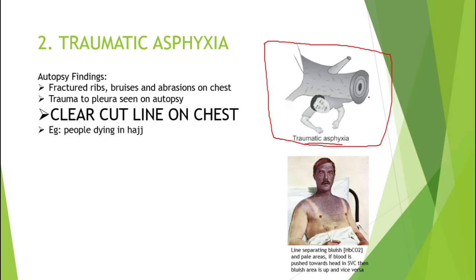This immobilization can be anterior — for example, if a person sits on the chest of the victim — or posterior, as in this picture where the trunk of the tree has fallen on the back. If the chest gets immobilized, the victim cannot generate enough negative intrathoracic pressure to cause air movement from outside to inside, leading to asphyxia and ultimately death.